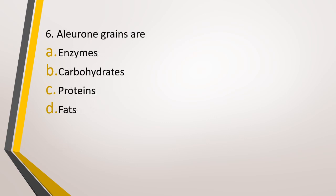Question number 6. Aleurone grains are: option A, enzymes; option B, carbohydrates; option C, proteins; or option D, fat. The correct answer is option C, that is proteins.